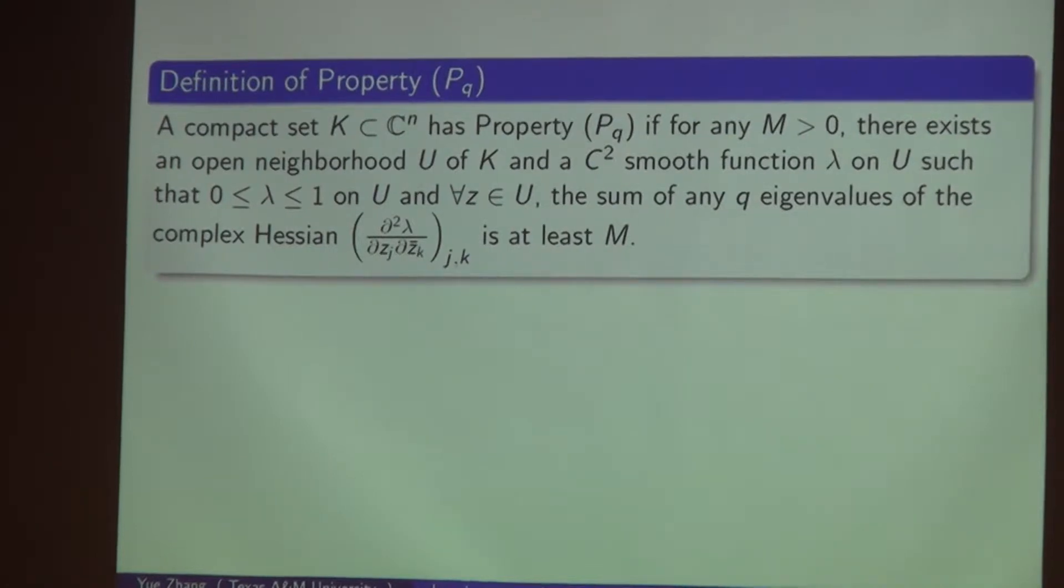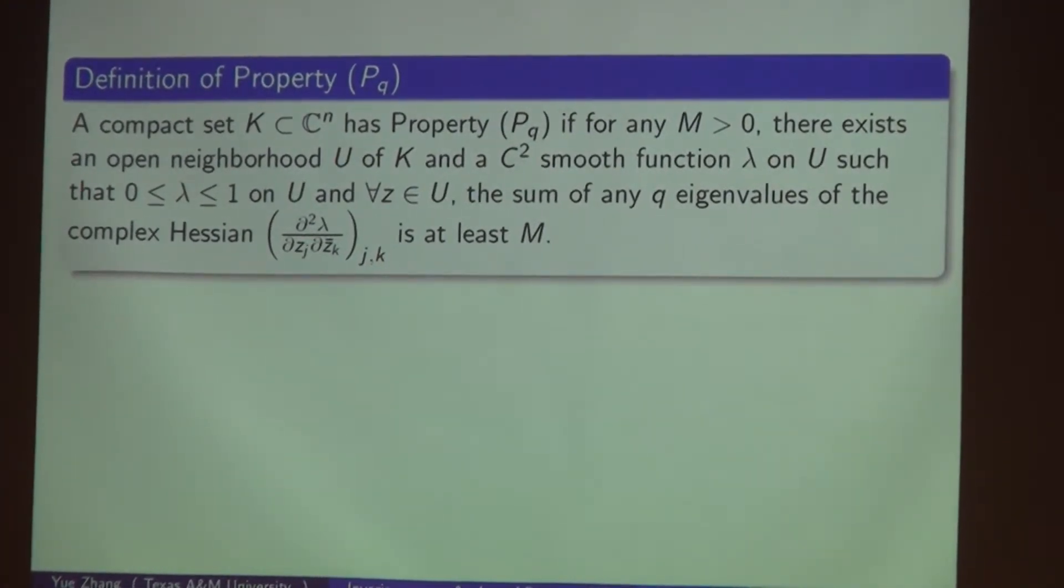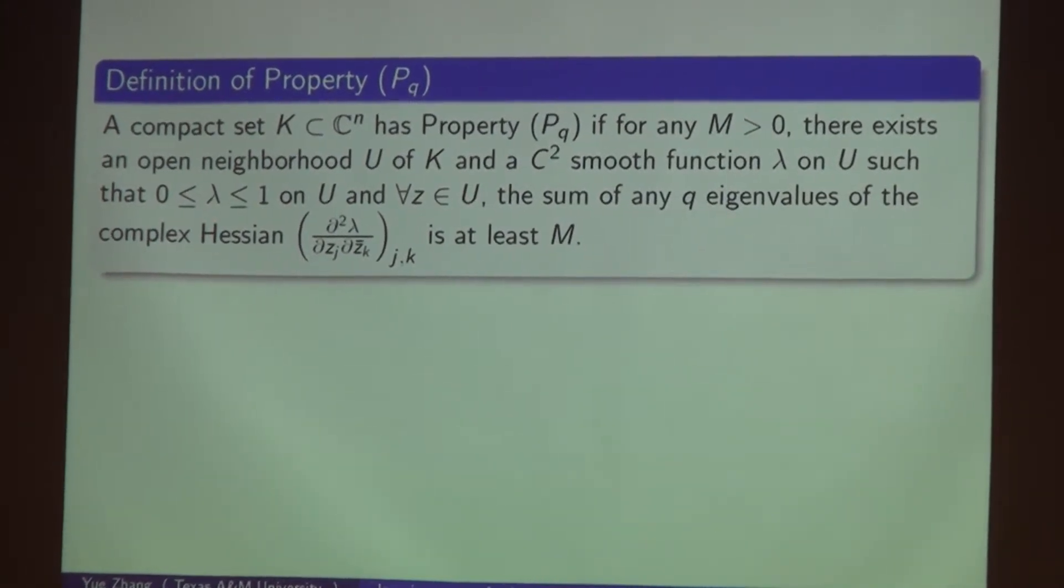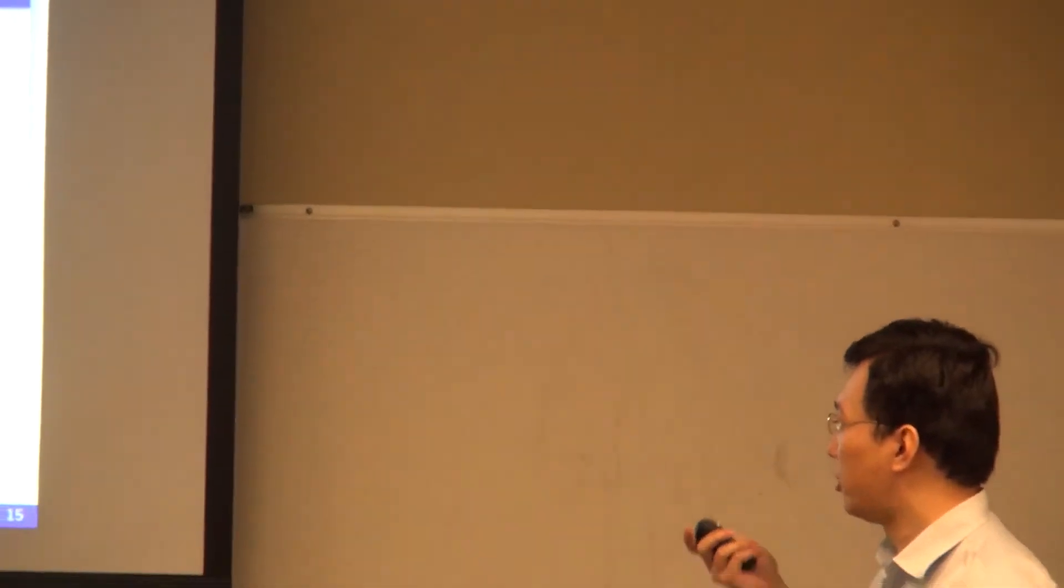For background, Catlin introduced Property P, or Property P_1, in his celebrated work proving the subelliptic estimate on pseudoconvex domains. Basically, we define a compact subset K in C^n has property P_Q for any number M (usually a large number). There exists an open neighborhood U of K and a C² smooth function lambda on U such that lambda is uniformly bounded by 0 and 1 (a normalization condition), and the sum of any q eigenvalues of the complex Hessian of lambda is at least M.